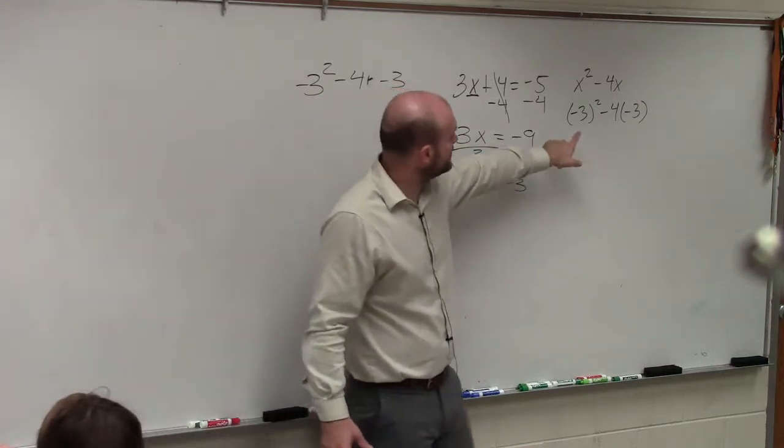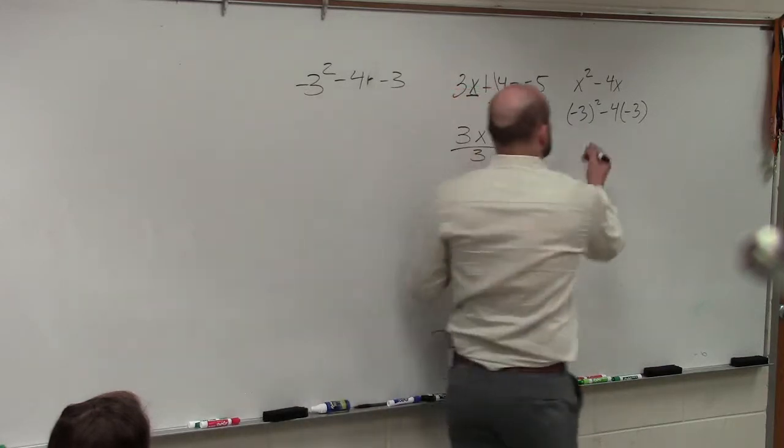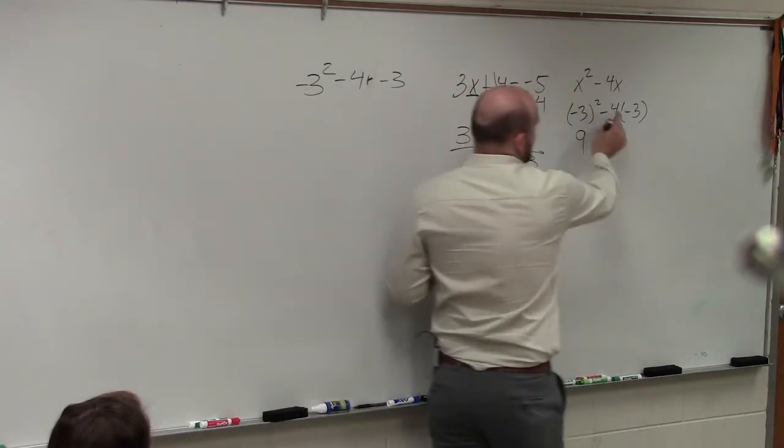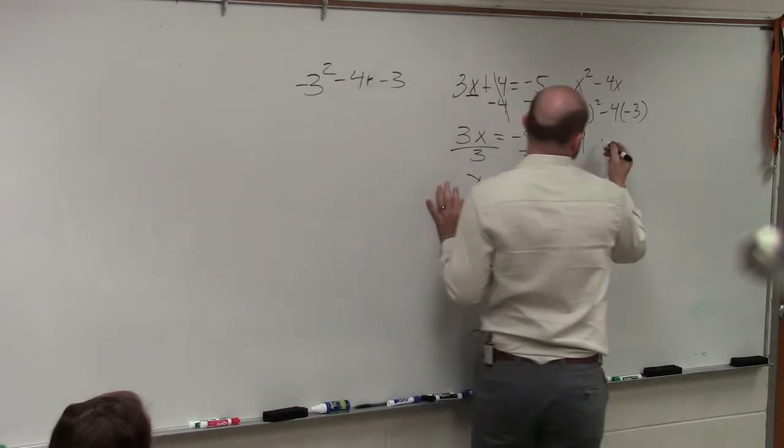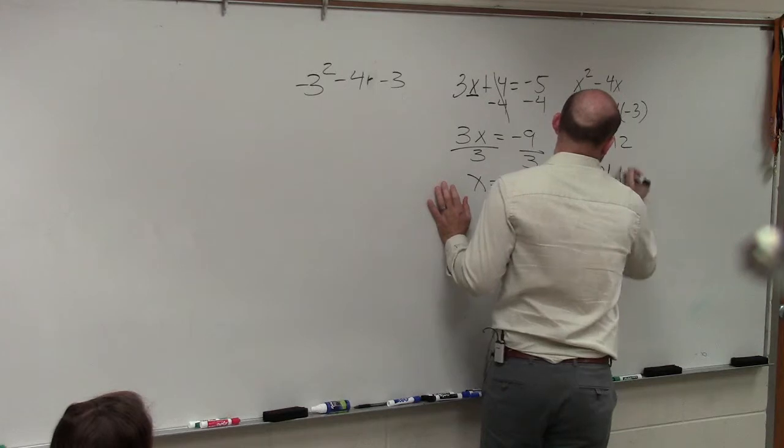So we have to make sure we insert parentheses, because this says negative 3 squared. Negative 3 times negative 3, which is positive 9. Then we have negative 4 times negative 3, which is positive 12. So your final answer is 21.